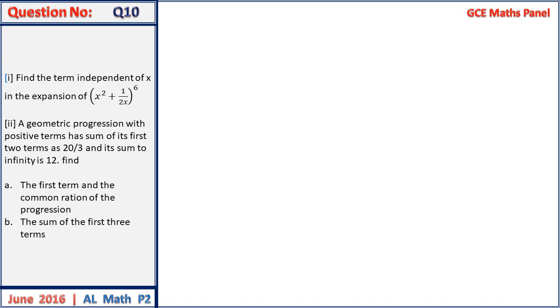Let us now look at question 10: find the term independent of X in the expansion shown here. The nth term in any expansion is given by n combination r, a to the power n minus r, b to the power r. In this particular case, a is x squared and b is 1 over 2x.